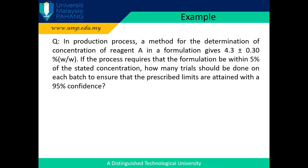Let's look at an example question. This question requires you to calculate the number of replicates with 95% confidence, given the mean is 4.3%, standard deviation 0.3%, and relative standard deviation is 5% or 0.05.